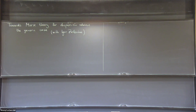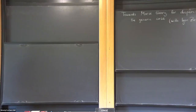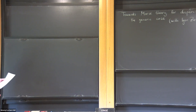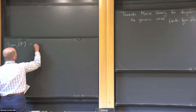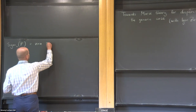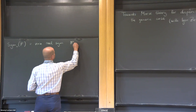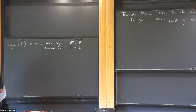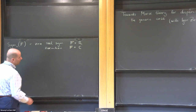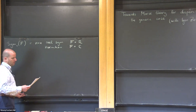Thank you very much. It's a great pleasure to be here today. Let me formulate the problem straight away and then give some motivation for it, and then formulate the results. I'll denote by Sym(n) the space of n by n matrices that are symmetric — real symmetric if the field is real, or Hermitian in the complex case. Most of the results apply to both cases, and when there is a difference I will specify which case the results apply to.